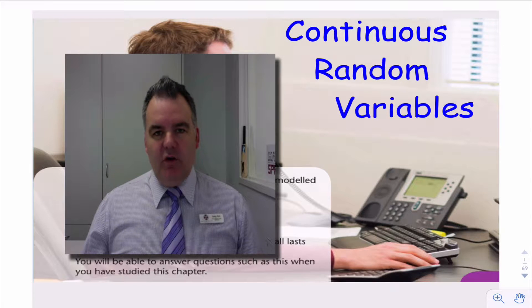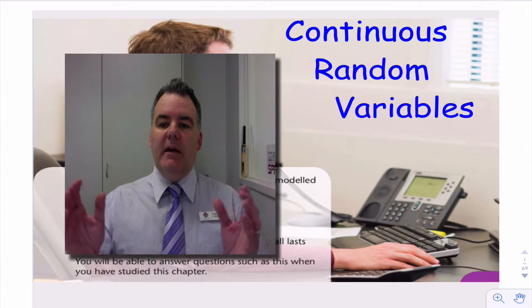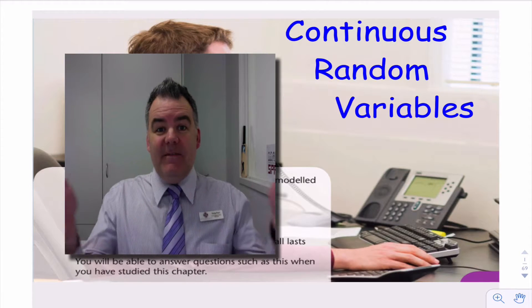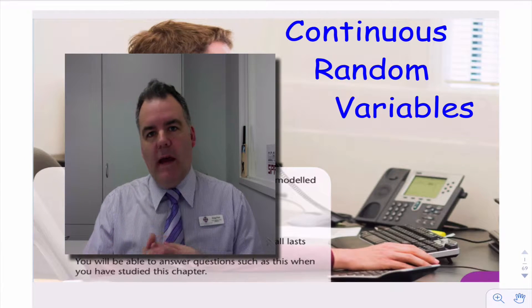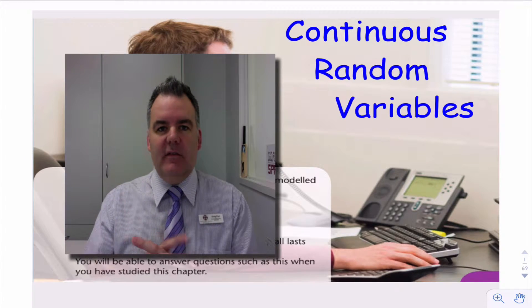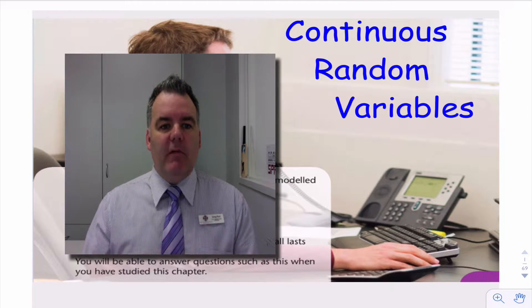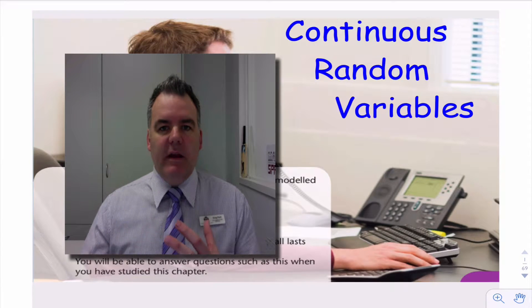In this unit of work, we're looking at continuous random variables. So they are random variables where between any two given values, you could have infinitely many values. So we're talking about things like height and weight and time. Those kinds of things are continuous random variables. So we might define a random variable as the height of a randomly chosen student from year 11 at a school.